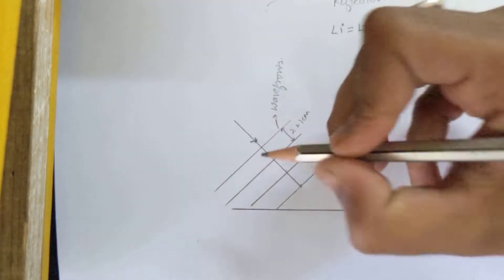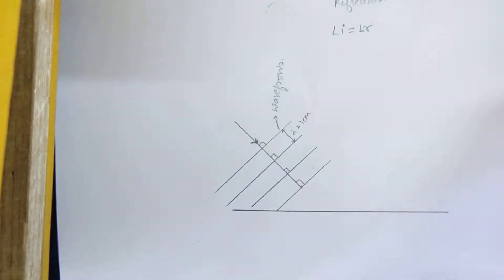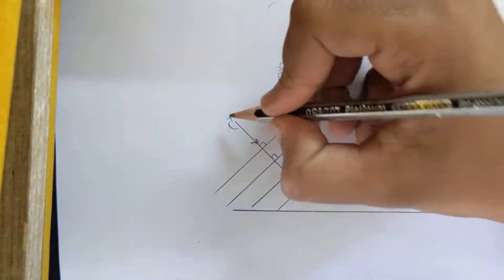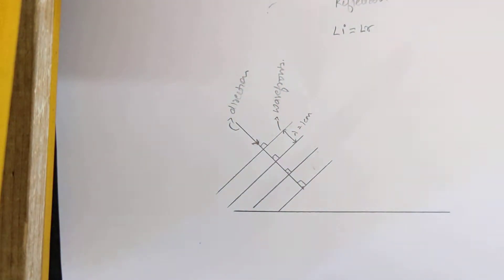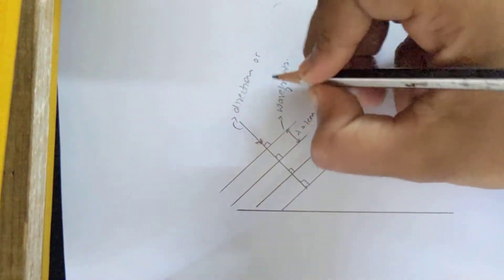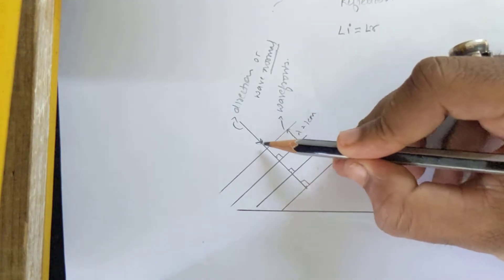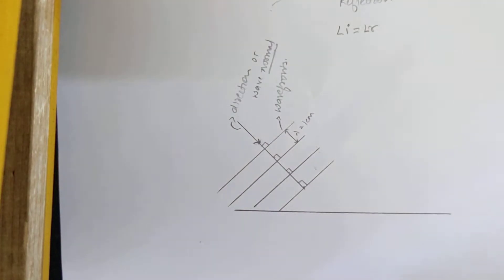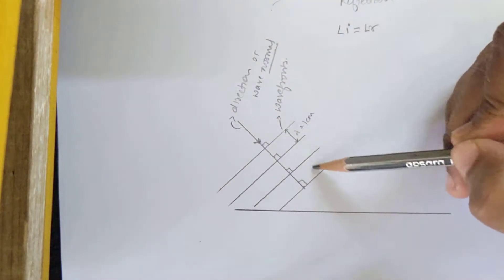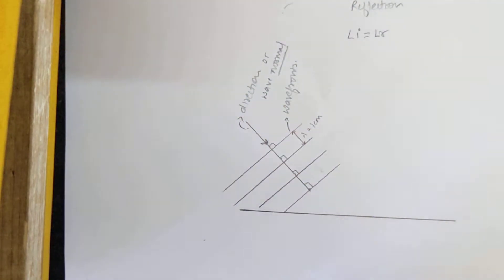The other line you see is perpendicular to all the wave fronts. There will be one more line perpendicular to all the wave fronts, and this is marked as the direction of wave travel, also known as the wave normal. It is called the wave normal because it is perpendicular to the wave fronts — normal means a line which is perpendicular. So this line is perpendicular to the waves and hence it is known as the wave normal.